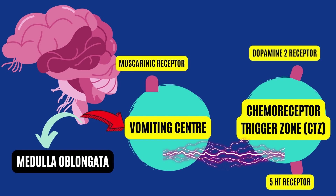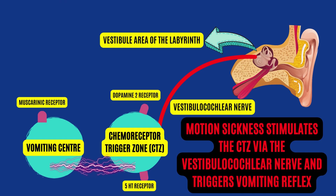Medications that control or are used to treat vomiting may inhibit this area to prevent vomiting, which we will discuss in the upcoming video. Now, let us quickly go through various causes that can stimulate the CTZ and thus induce vomiting.